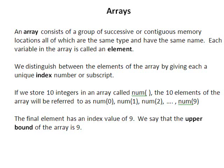Each variable in the array is called an element, and the way we distinguish between these elements of the array is by giving each one a unique index or subscript. So for example, if we store 10 integers in an array called num, and notice that we have a set of brackets at the end of the name of the array, this distinguishes it from an ordinary variable name.